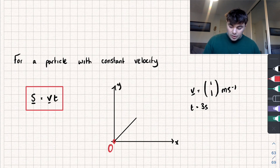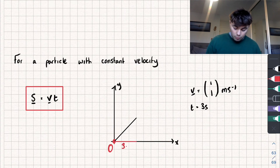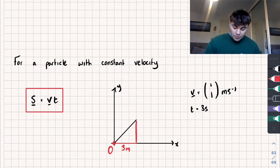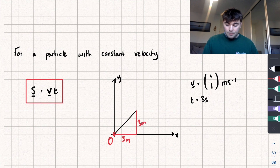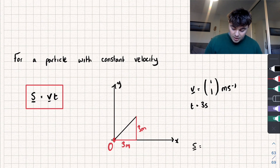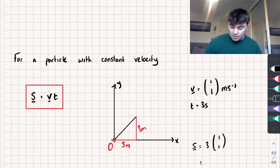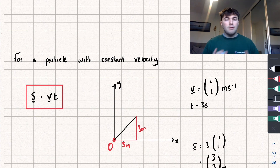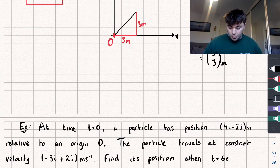So it's moved 3 meters to the right and 3 meters up. We could have found that by saying its displacement equals its velocity vector multiplied by the time: 3 multiplied by vector (1, 1), giving a displacement of (3, 3) meters — which it is. Hopefully that makes sense and you can see why that formula is true.